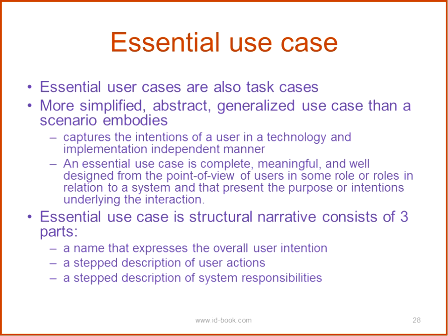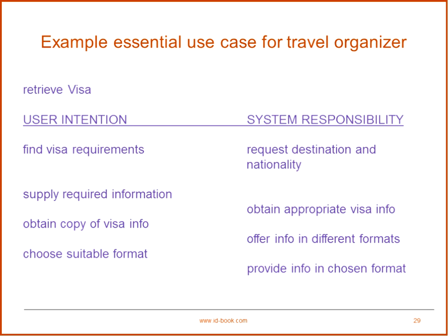For example, the user intention is to retrieve visa information. The user will try to find visa requirements. The system will request destination and nationality information. The user will supply the required information. The system processes it and obtains appropriate visa information. The user tries to obtain a copy of the visa information. The system offers different formats. The user chooses a suitable format and the system provides the information in that format.